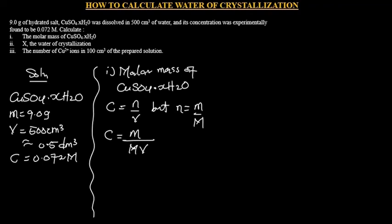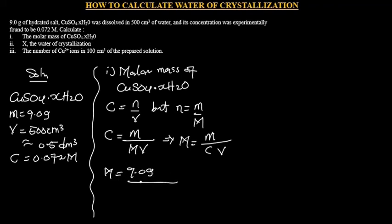We are interested in the molar mass, so when we make molar mass the subject, we get molar mass M equal to mass divided by concentration times volume. Plugging in the values: mass is 9.0 grams, concentration is 0.072, and volume is 0.5 dm³. When we calculate this, we get 250 grams per mole.